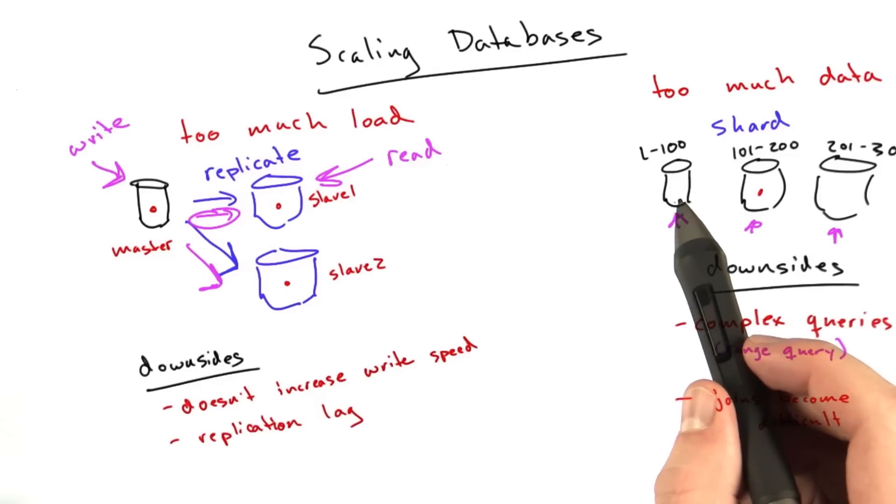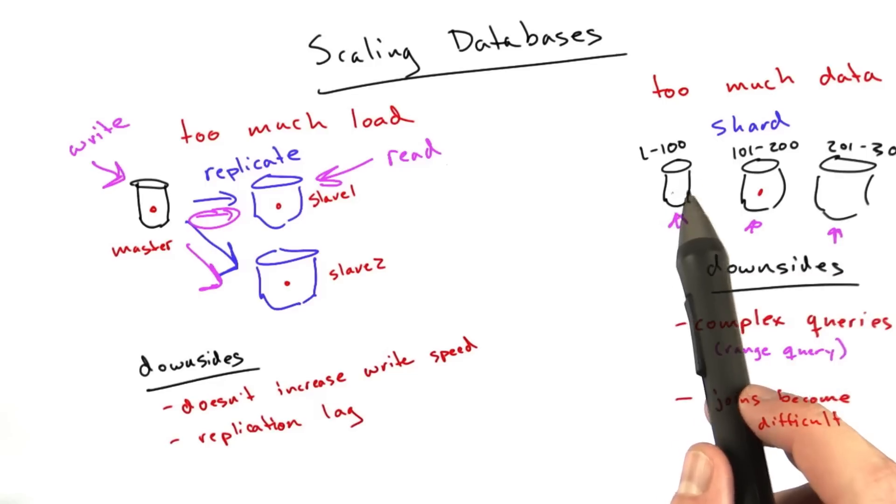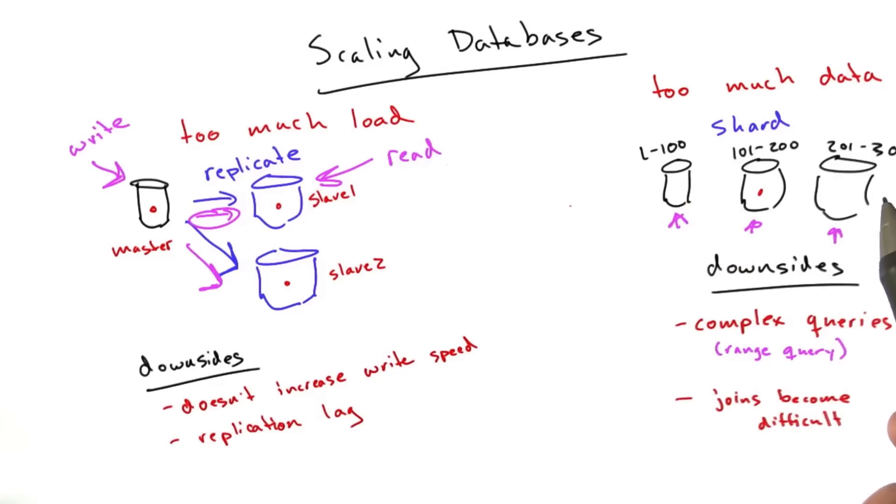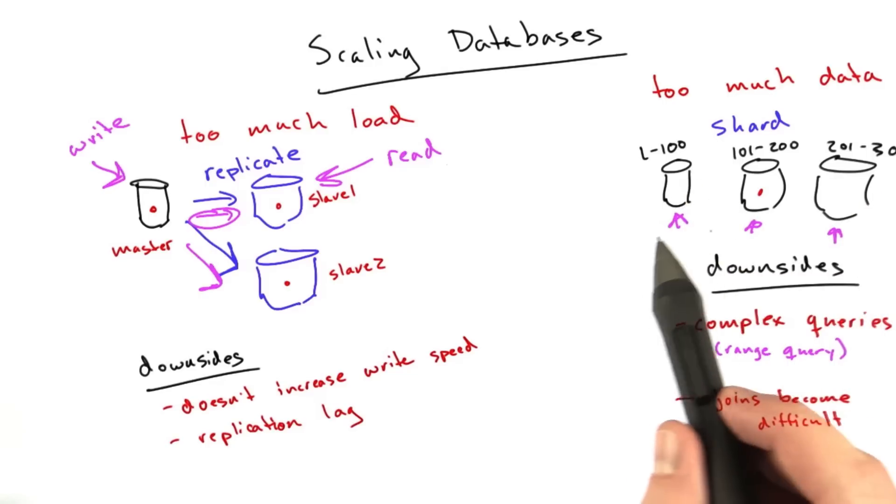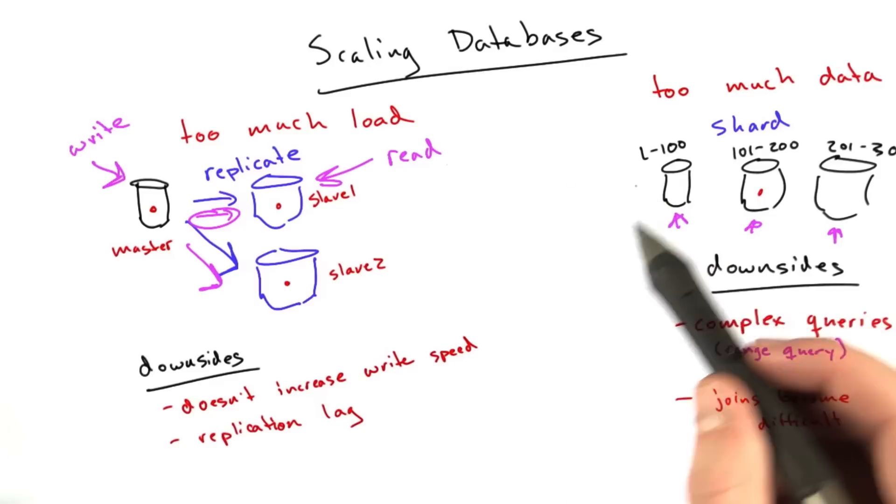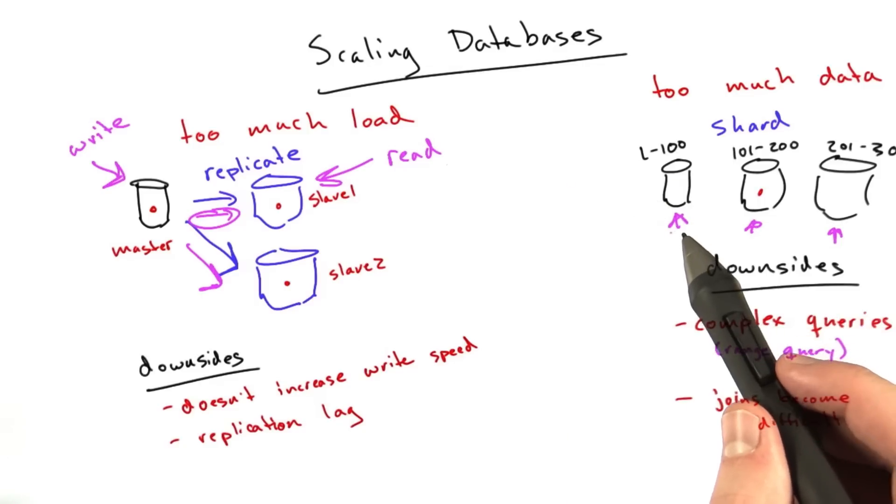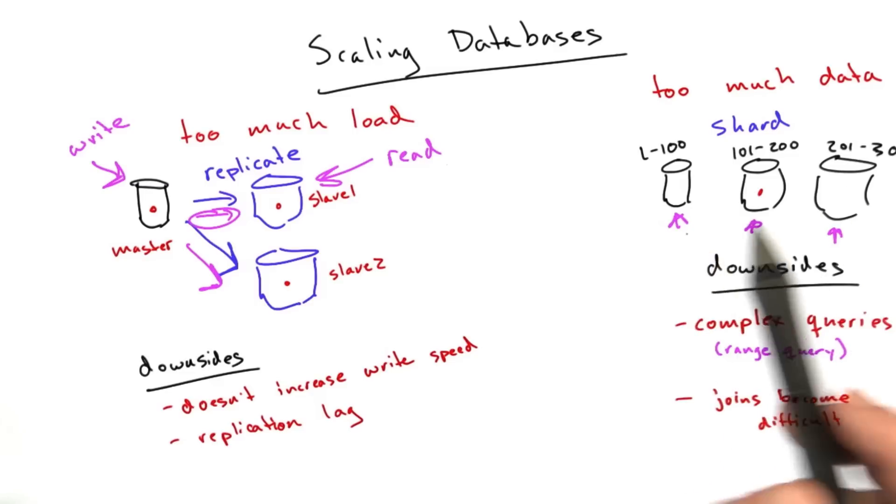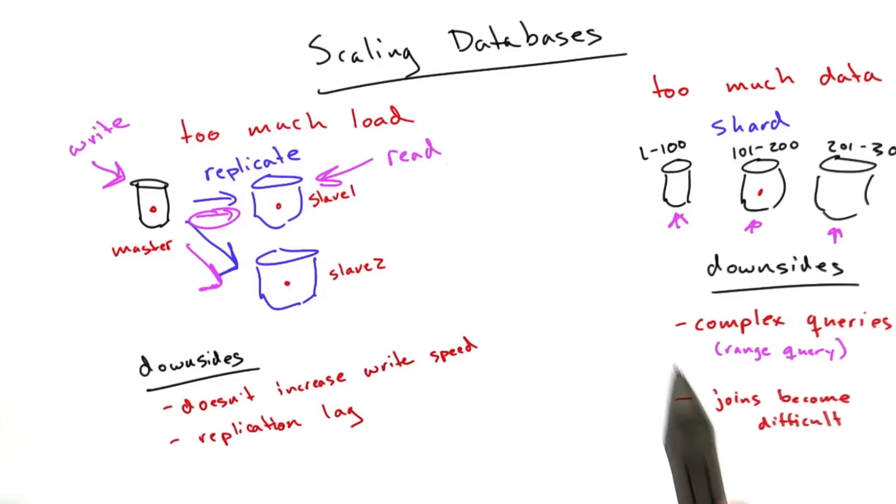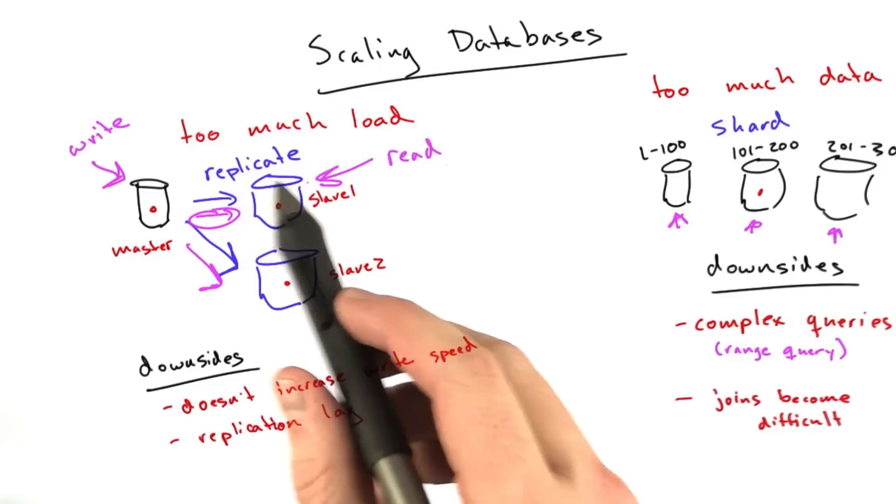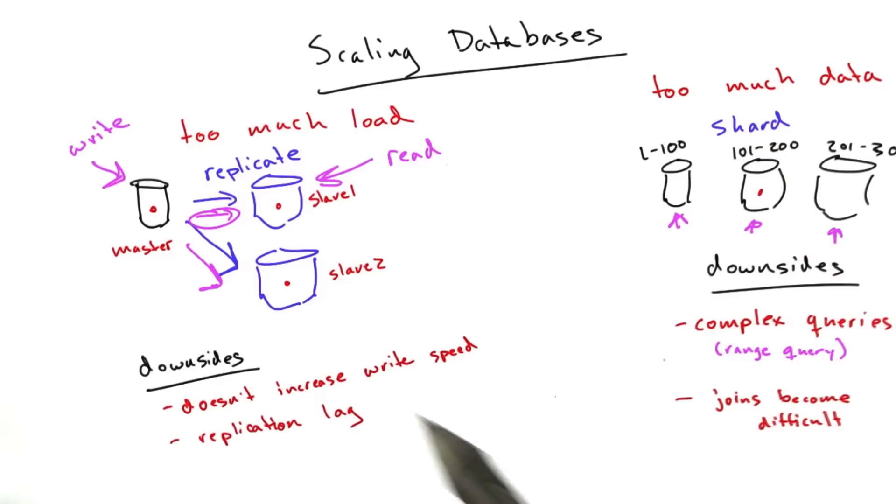Some queries become very, very complex. Another downside is that joins become difficult or impossible. That makes sense. If we have this master database that has multiple tables on it, we can do joins. But if we start sharding our database up, we have one database that doesn't even fit on one machine. So if we can't fit one database on our machine, how are we going to fit multiple databases? This notion that you have all of your tables in the same place to do a join becomes a lot more difficult.